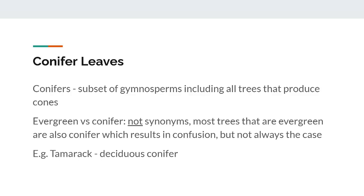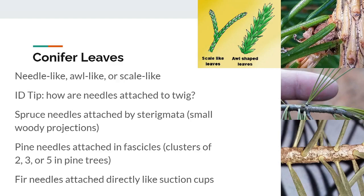The majority of gymnosperm leaves are part of a subset called conifers, which includes all trees that produce cones. Make sure you understand that the terms evergreen and conifer are not synonyms, as they describe different properties of a tree — they are often confused because most evergreen trees are conifers, but this is not always the case. On the national forestry list, consider the tamarack, a deciduous conifer. The leaves of conifers can be either needle-like, awl-like, or scale-like. A key property when differentiating needle species is how the needles are attached to the twig: spruce needles are attached by small woody projections called sterigmata, which remain after the needles are shed; pine trees have needles attached in clusters called fascicles; and fir tree needles are attached directly to the twig in a suction cup-like manner.